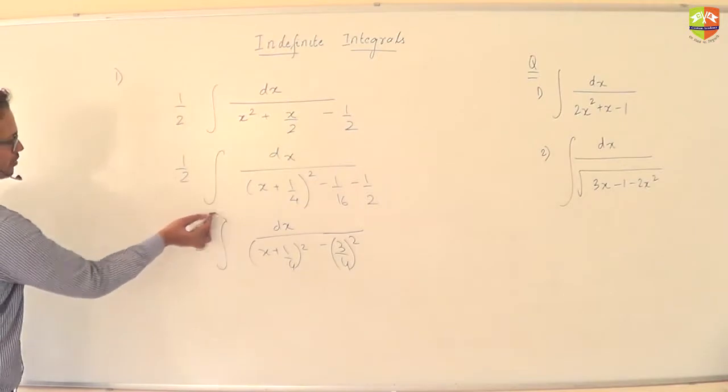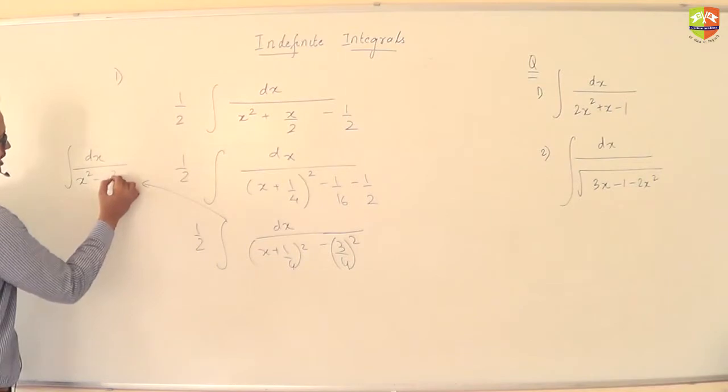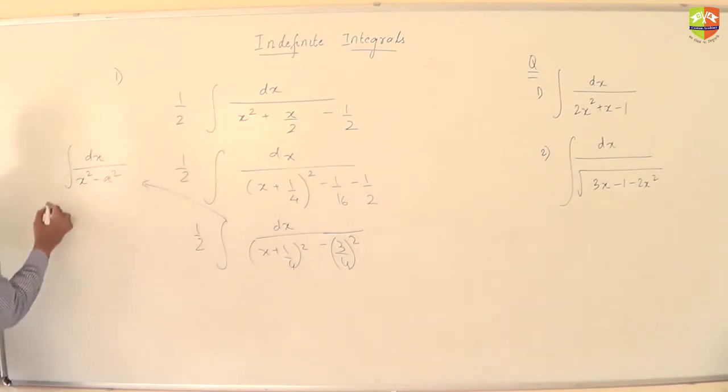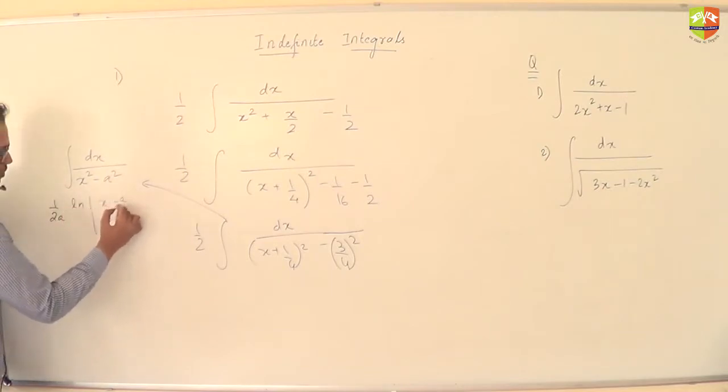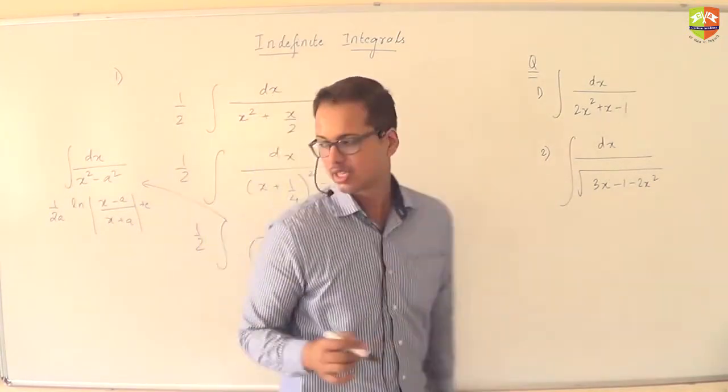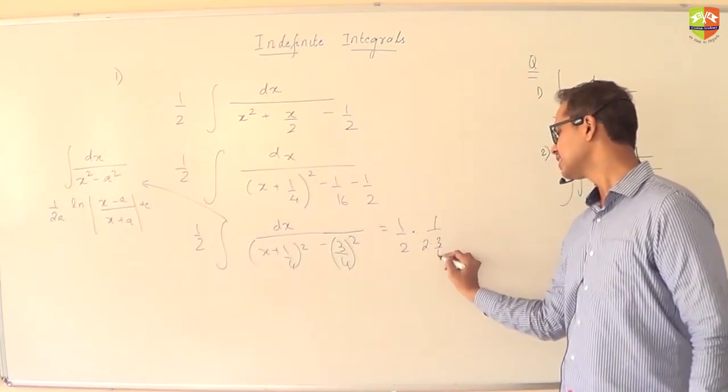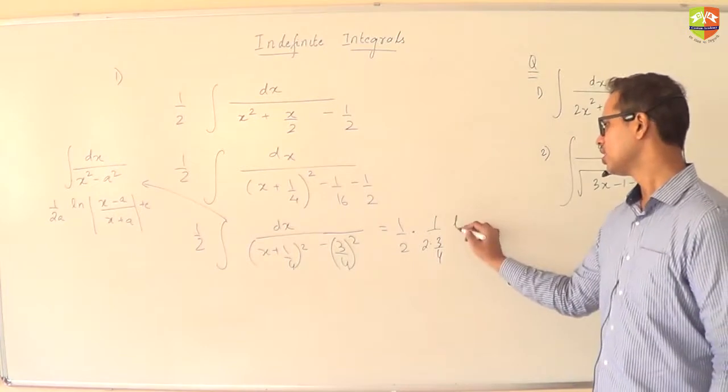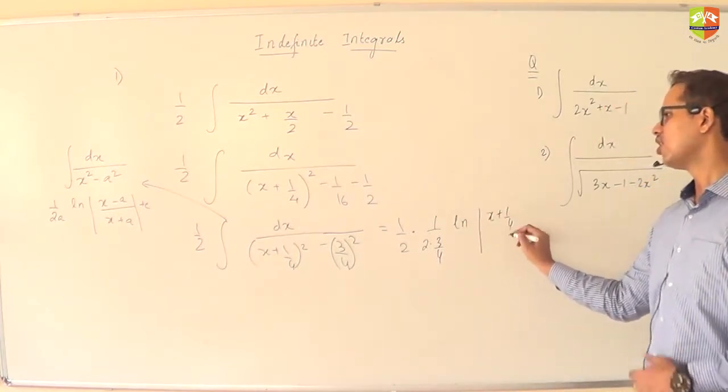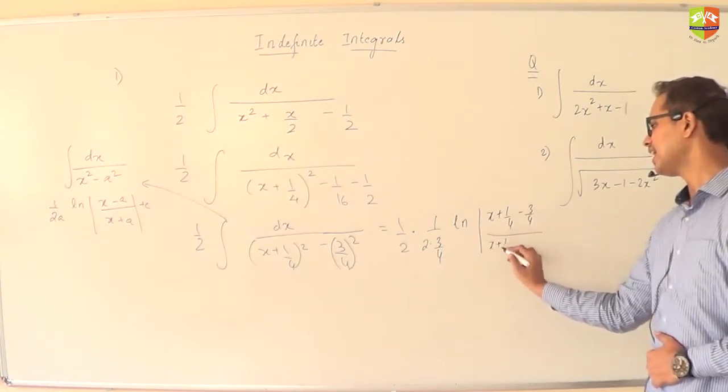Now this resembles the formula of dx by x square minus a square. Whose result is 1 by 2a ln x minus a by x plus a plus c. So likewise here the result will be 1 by 2, this 1 by 2, and then 1 by 2a, which is this, ln of x minus a by x plus a.